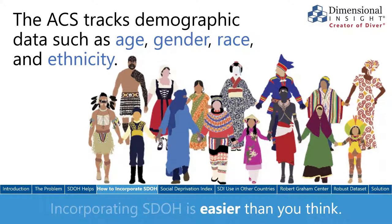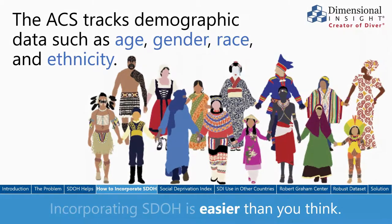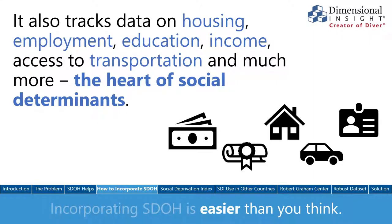Among the data collected are demographics — age, gender, race, and ethnicity — updated from the decennial census on a more regular basis. There are also social determinants factors such as housing, employment, income, access to education, access to transportation, and much more. There's also a wide range of geographic options ranging from individual census blocks of just a few thousand people up through census tracts, zip codes, counties, and larger metropolitan and rural statistical areas. That allows you to estimate the social characteristics of populations at various levels of granularity, right down to a neighborhood at the census block level.